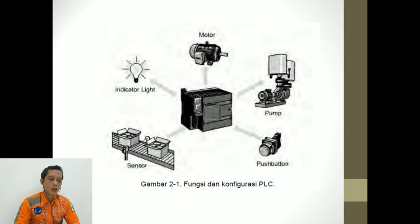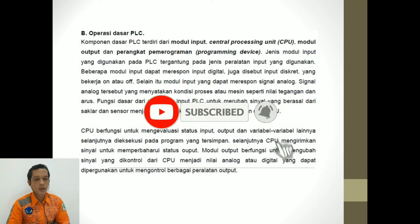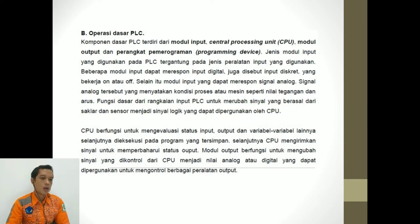Ini adalah gambaran konfigurasi daripada PLC beserta fungsinya. PLC yang ada di bagian tengah ini bekerja untuk menghubungkan antara peralatan input yang terdiri dari sensor dan push button, kemudian diolah dengan program yang ada di dalam PLC untuk menggerakkan indikator lampu, motor listrik, maupun pompa, dan peralatan output lainnya atau aktuator. Komponen dasar PLC itu terdiri dari modul input, CPU, dan modul output, serta perangkat pemrograman atau programming device.